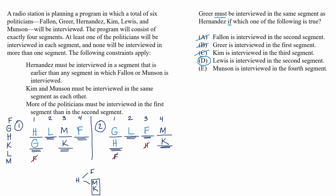Let's take a quick peek at E. It tells us that Munson is interviewed in the fourth segment. This doesn't work for us because Munson is interviewed in the fourth segment in scenario two, and it doesn't result in Greer and Hernandez being paired.